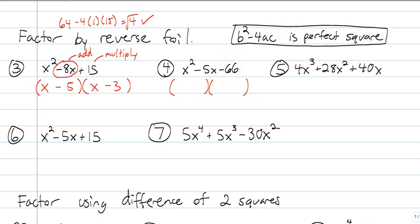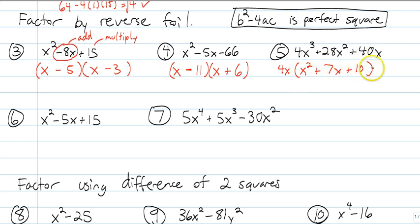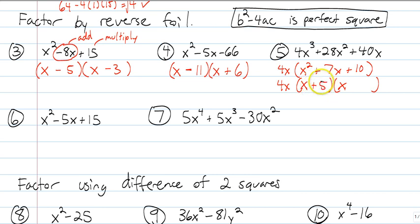Why don't you guys pause the video and try a couple of these. First thing you should always do is try to take out a GCF — there's no GCF to take out of number 4, no x term, no number term, so we go right to our binomials. Numbers that multiply to 66 — let's try 11 and 6. I need to get negative 5 when I add those together, so one has to be negative and one positive. It should be negative 11 and positive 6 — these add to negative 5 and multiply to negative 66. Number 5: we need to take our GCF out first. We can take a 4 and an x out of everything, so 4x on the outside. This becomes x squared, this becomes 7x, and this becomes just 10.